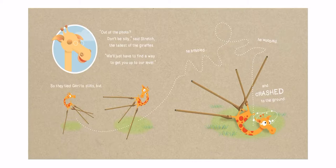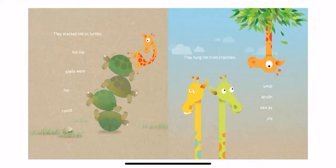So they tied Jerry to stilts, but he bobbled, he wobbled, and crashed to the ground. They stacked him on turtles, but the shells were too round. They hung him from branches, but he was upside down.